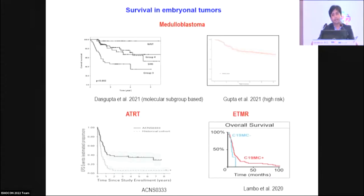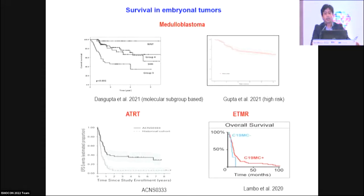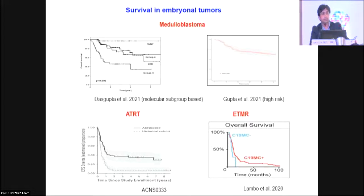One major consideration when treating these patients with adjuvant therapy is survival. With the massive shift in understanding and molecular stratification, we have a fair idea — WNT group lives longer while Group 3 metastatic has poor prognosis. We have moved beyond conventional risk stratification. Non-medulloblastoma tumors have universally poor prognosis. This guides treatment decisions, counseling about treatment implications, and expected side effects.